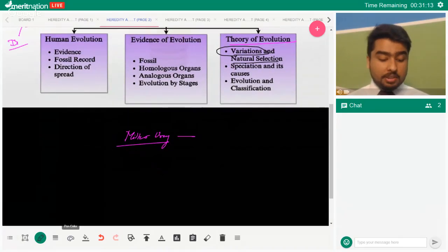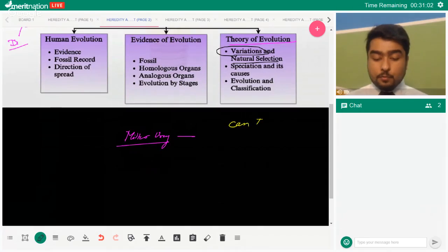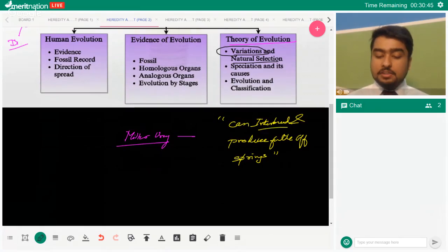Speciation and its causes - many people are asking about speciation. What's the species? A species is a group of individual which can interbreed and produce, which can interbreed and produce fertile offsprings. Very important. This is the definition that you have to use for species - which can interbreed and can produce fertile offsprings.